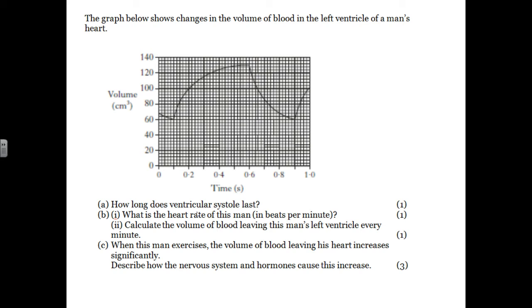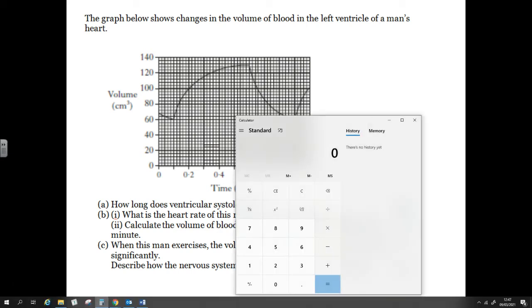What's the heart rate of the man in beats per minute? So it looks like it takes 0.8 seconds for the heart to complete the cycle. So it would be 60 divided by 0.8, and obviously 60 divided by 0.8 is 75.